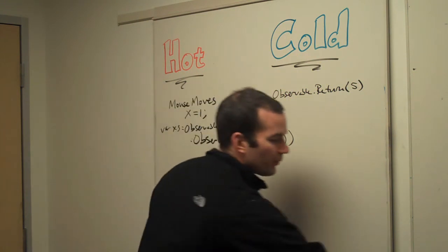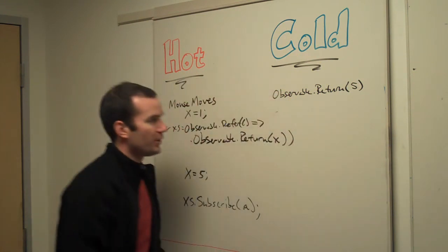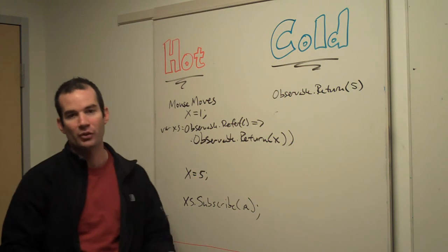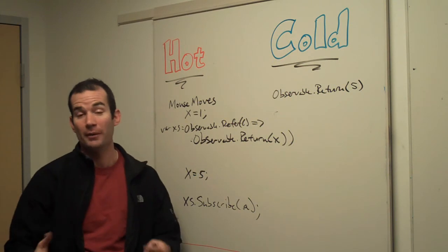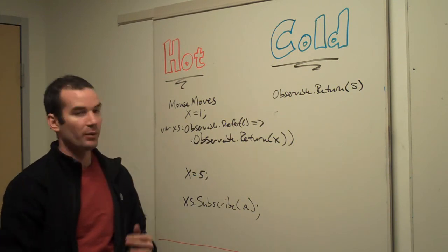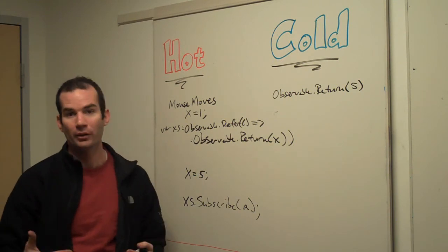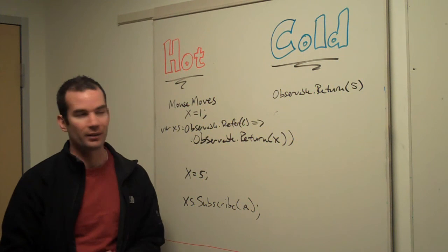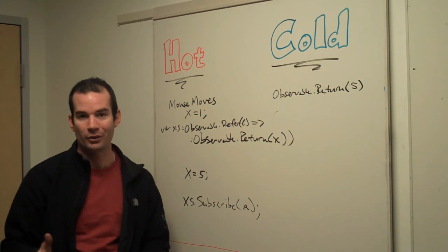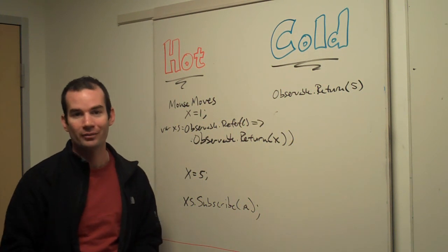So it's a rather important difference between things that come into existence because you observe them — and for each time you observe them — rather than things that already exist. Remember that difference when you write your code for Rx.